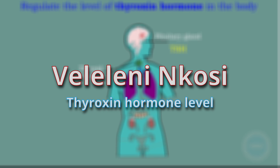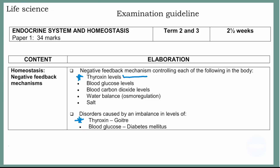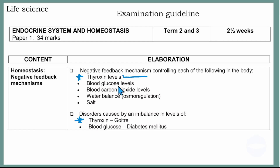I will be looking at how our body regulates the level of thyroxine hormone. As always in our videos, we start with the examination guideline. This guideline is for life sciences, and we are still on the endocrine system and homeostasis. Today we will be looking at the negative feedback mechanism controlling the thyroxine level. I will also explain the disorders caused by the imbalance in the level of thyroxine. So this is the content of this video.